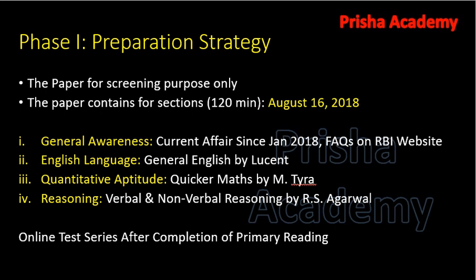There will be around half a million people appearing for the exam, so to screen out candidates and find the deserving ones, Phase 1 is conducted. The marks obtained in Phase 1 are not considered for the final selection or merit declaration. This paper will be completed in 120 minutes and will be conducted on August 16, 2018. It will contain four sections: general awareness, English language, quantitative aptitude, and reasoning.